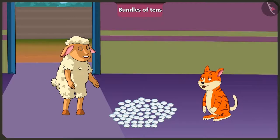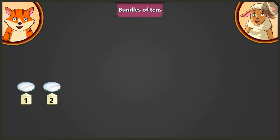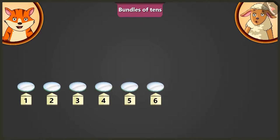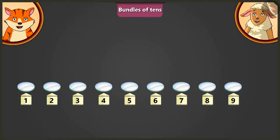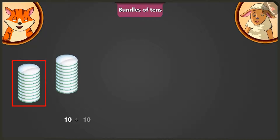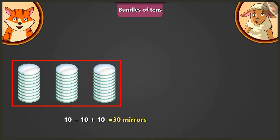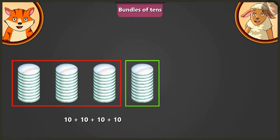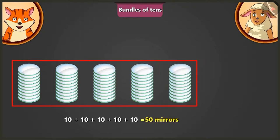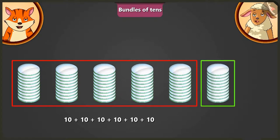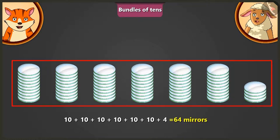Yes, okay, but first tell me how many mirrors are there in total? I will count them by making groups of 10. 1, 2, 3, 4, 5, 6, 7, 8, 9, 10. Adding a 10 and a second 10, we get 20. Adding another 10 to 20, we get 30. Adding another 10 to 30, we get 40. Adding another 10 to 40 makes it 50. Adding the remaining 10 to 50 makes it 60. Now, adding 4 mirrors to 60 will make it 64 mirrors.